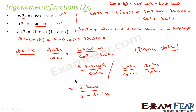And that is exactly what we stated. So we have proved all three formulas: cos 2x equals cos squared x minus sin squared x; sin 2x equals 2 sin x cos x; and tan 2x equals 2 tan x by 1 minus tan squared x.